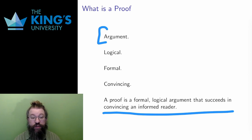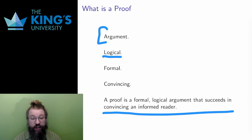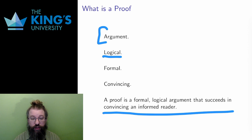Second, a proof is logical. Though mathematical discovery can happen in a variety of ways, the presentation of mathematical ideas happens through logic. A proof will be a series of logical statements and implications. If successful, the chain of logic will lead from the assumptions of the proof to the desired conclusion.